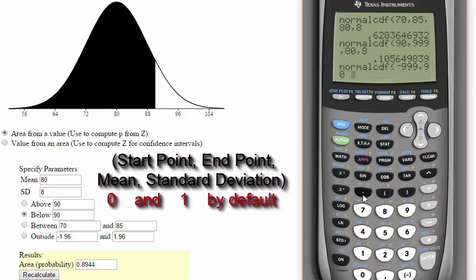The important thing to remember is that the order is start point, endpoint, mean, standard deviation, all separated by commas. This will graph for you the area between those two points.